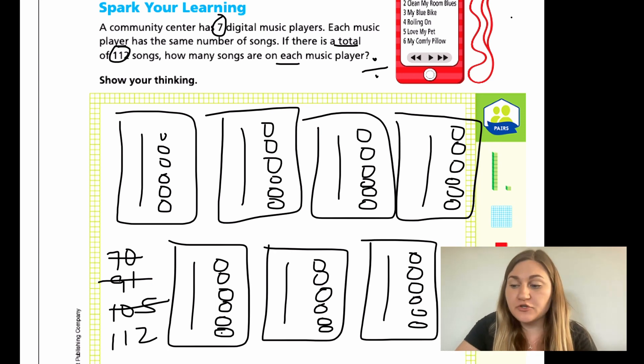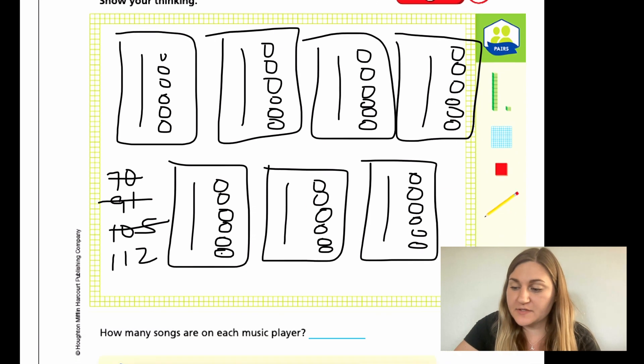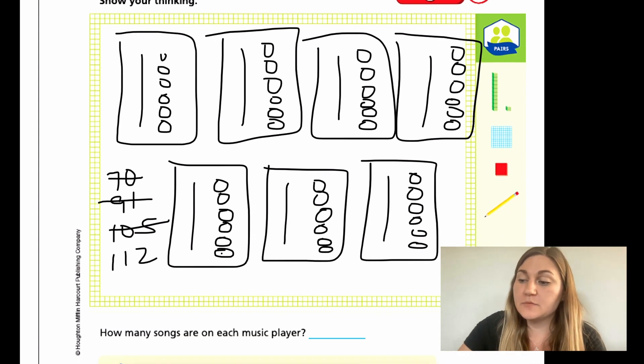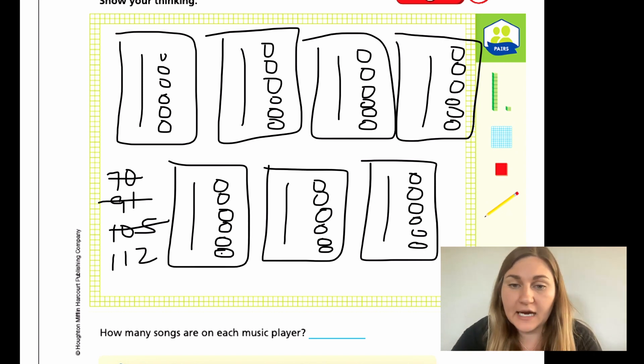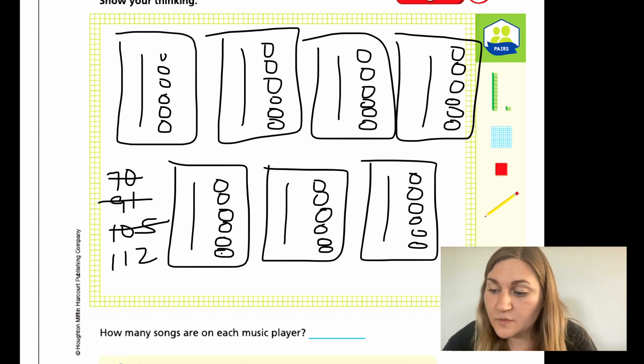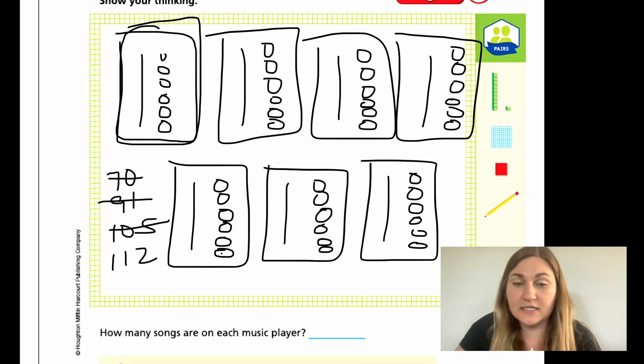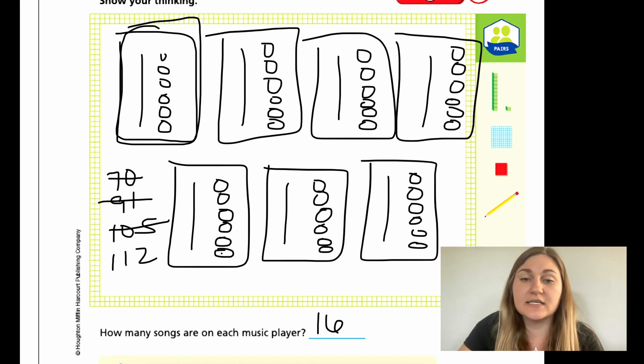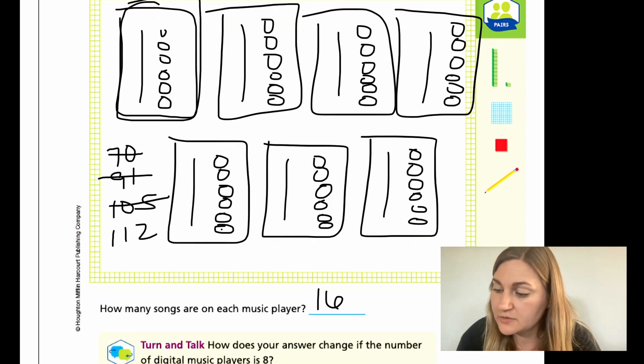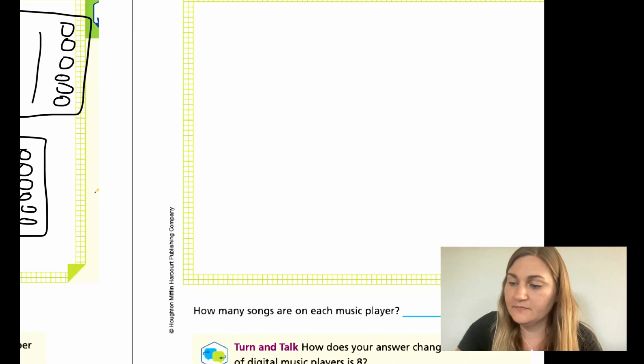So I got to my 112 just by breaking up the numbers. Now the question below the green box is asking how many songs are in each music player? So how many are in each rectangle? Remember that line here represents 10. So I have 10, 11, 12, 13, 14, 15, 16. So in here I have 16, which represents 16 songs on each player. All right.